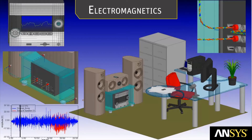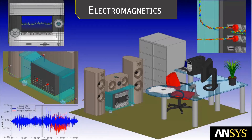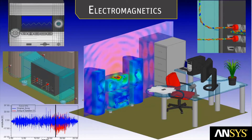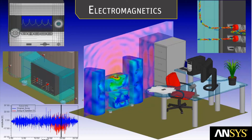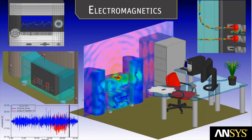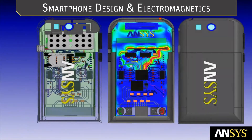It's all around us — from the current that flows in a speaker wire to the electromagnetic interference, or EMI, that is produced by a smartphone when placed by a speaker. Electromagnetics is what allows the modern world to exist. Smartphone design and electromagnetics.